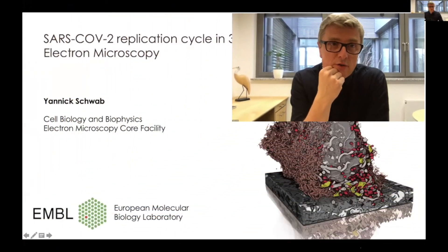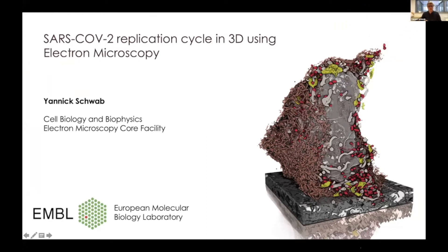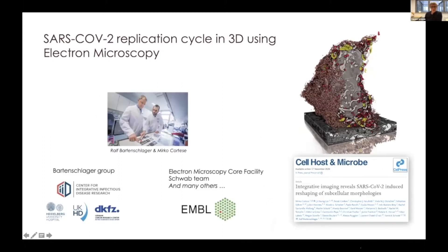What I'm going to show you today is the efforts we made last year trying to use our imaging methods to study the replication cycle of the coronavirus in lung cells. We applied state-of-the-art electron microscopy methods that are routinely applied in cell biology. We were contacted by Ralph Bartenschlager's group, which is dedicated to studying viruses — more specialized on hepatitis virus but also zika and others — and with the outbreak of the pandemic, his lab started to study the coronavirus. They were interested to learn the cell biology of the infection and contacted us at the MBL electron microscopy core facility to see if we could help image their infected cells.